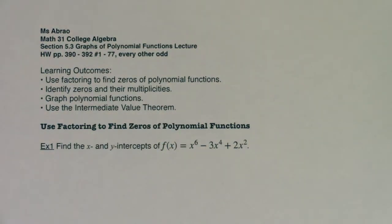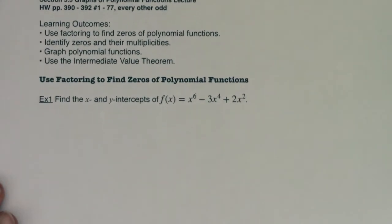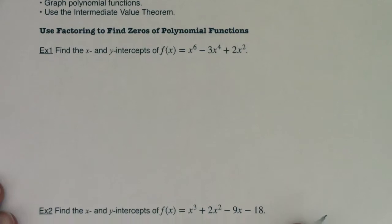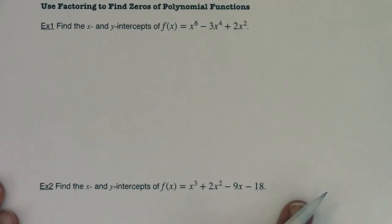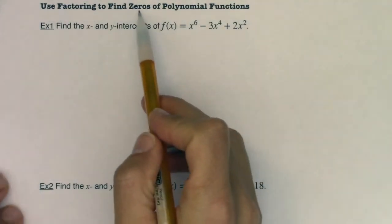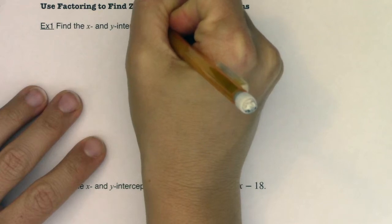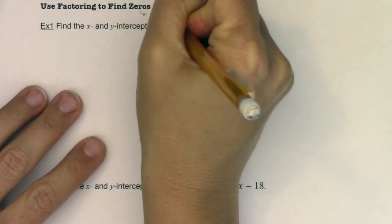And again, at the end of this, even though we do all the algebra by hand, we can still check ourselves with our graphing calculator. All right. So with that, let's go ahead and look at example one. I'm going to scooch this up. All right. So we want to use factoring to find zeros of polynomials. And when I say zeros, when you hear that phrase zeros, that's another word for x-intercepts.